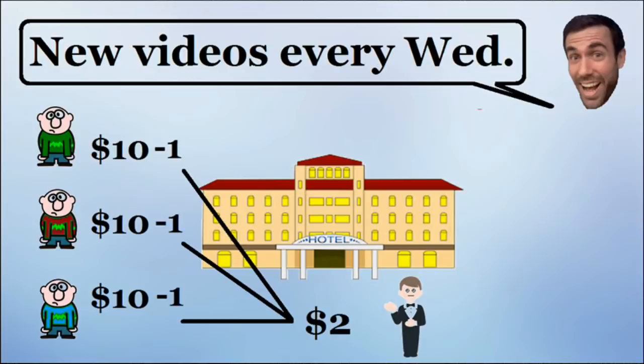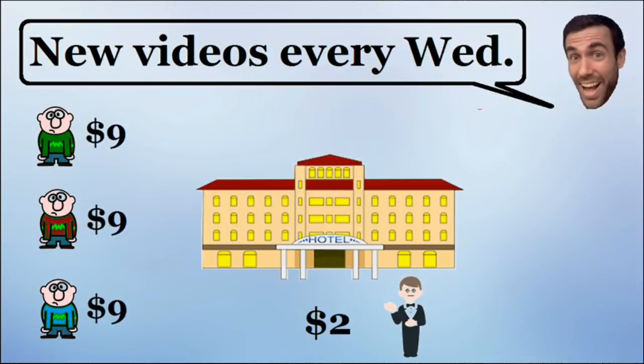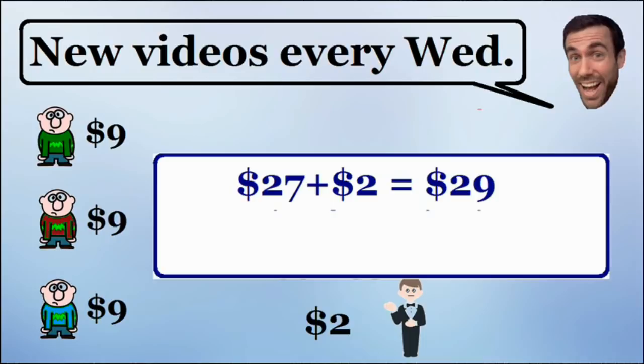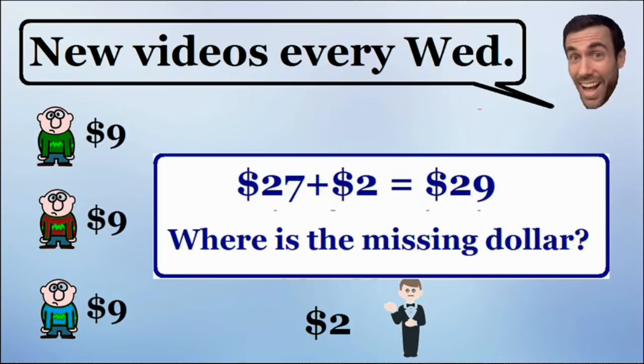So now if we take the $10 they paid initially minus the $1 they were refunded, each of them paid $9 for the room. So if they all pay $9 each, that gives us a total of $27. If we add that with the $2 tip of the bellboy, $27 plus $2 is equal to $29. And the question for this brain teaser is: where is the missing dollar? We started with $30 and now we have $29.